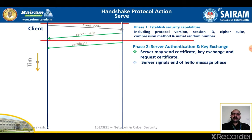A server key exchange message may be sent if it is required. It is not required in two instances: first, when the server has sent a certificate with a fixed Diffie-Hellman parameter, or second, when RSA key exchange is going to be used. The server key exchange message is needed when it is used for anonymous Diffie-Hellman, ephemeral Diffie-Hellman, or RSA key exchange, where the key is mandated.